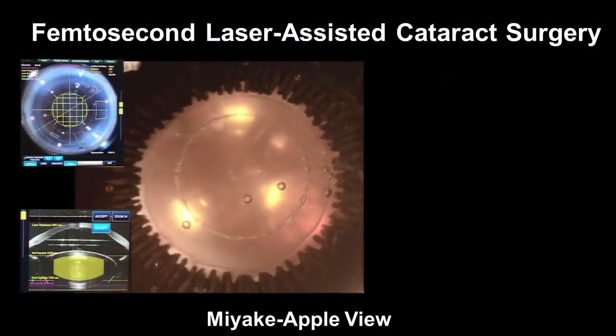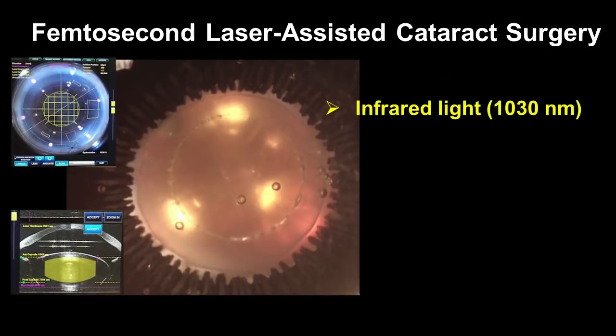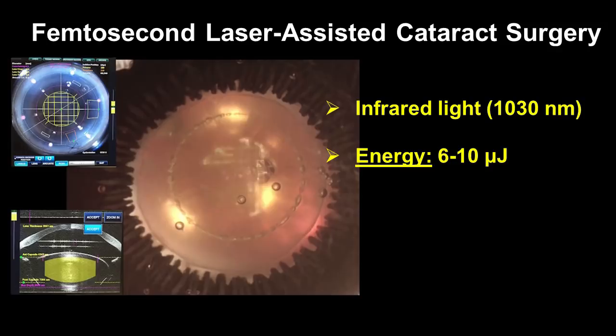In femtosecond laser-assisted cataract surgery, the system uses infrared light. The average energy levels can vary from 6 to 10 microjoules depending on the system used and the step of the procedure. Photodisruption is achieved by plasma generation within the affected tissue.